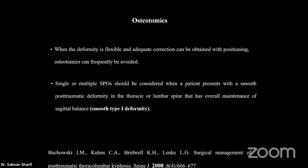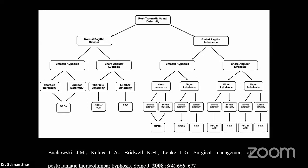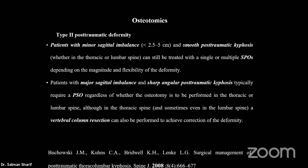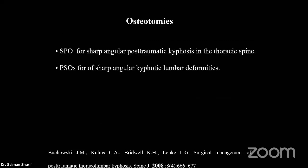Osteotomy is another topic. They have a guideline: if the patient is sagittally balanced and has a smooth kyphosis, Ponte osteotomies will help. If the patient has sagittal imbalance or a sharp angular kyphosis, pedicle subtraction osteotomies are required. For sharp angular deformity at the thoracic spine, Ponte or Smith-Petersen osteotomies are fine, but for sharp angular kyphotic deformity at the lumbar area, pedicle subtraction osteotomy is needed.